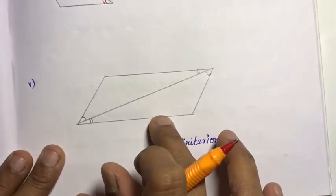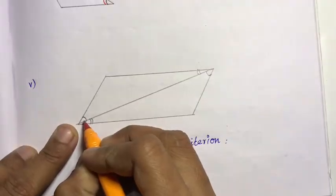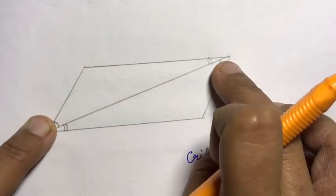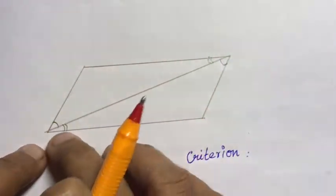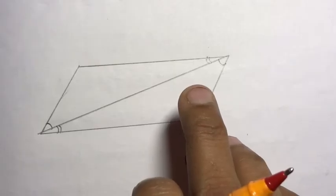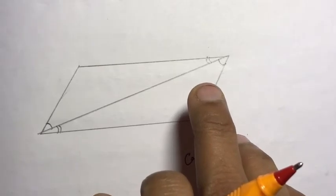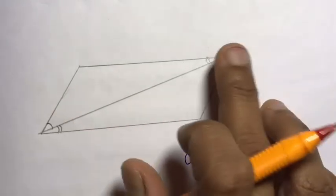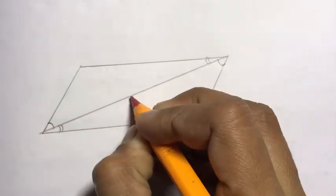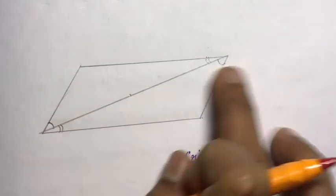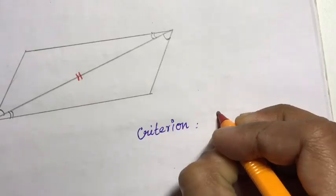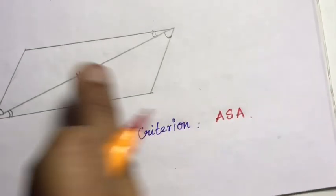Fifth one: the two triangles — what criteria is used? The two corresponding angles are equal. The side included between the angles is also equal — this is the common side, so it is equal. Now the criteria is Angle-Side-Angle (ASA), and the two triangles are congruent.